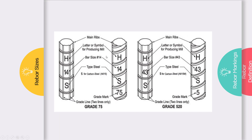Rebar markings: this is the main ribs, this is the letter or symbol for the producing mill, this is the bar size, this is the type of steel, this is the grade mark, and this is the grade line.